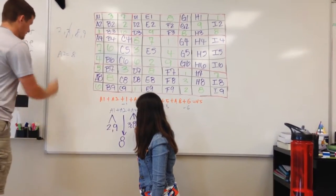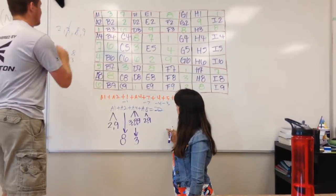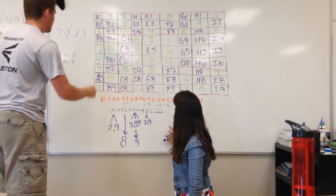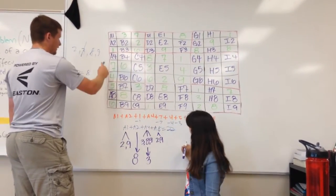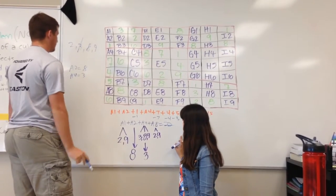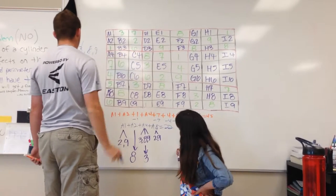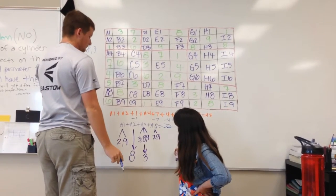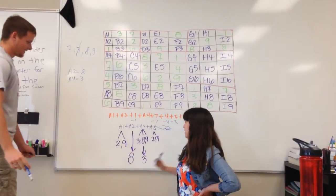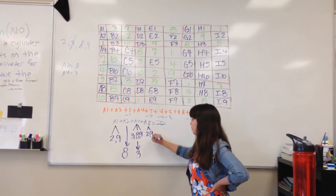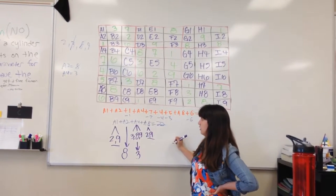And then A2 has a 9. A2 has a 9. So A1 doesn't have a 2 or 9, and A8 doesn't have a 2 or 9, so these two will have to stay as variables for now. Thank you.